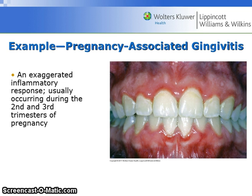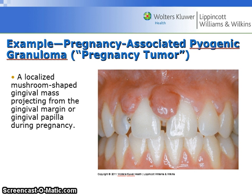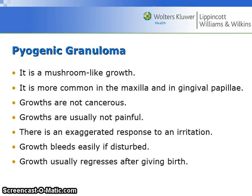Pregnancy-associated gingivitis shows an exaggerated inflammatory response, usually occurring during the second and third trimesters of pregnancy. Pregnancy tumor, or pyogenic granuloma, is a localized mushroom-shaped gingival mass projecting from the gingival margin or gingival papilla during pregnancy. It is more common in the maxilla and gingival papilla. Growths are not cancerous, usually not painful, and represent an exaggerated response to irritation from plaque.